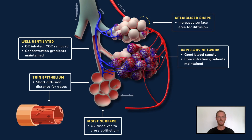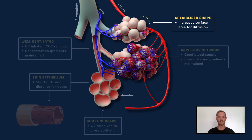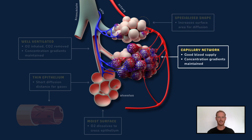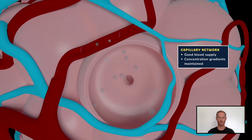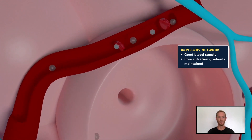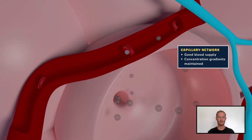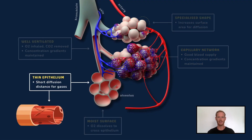The alveoli have a number of features that ensure gases diffuse efficiently. Their vast number and specialised shape maximises the area of the exchange surface, and they have an excellent blood supply as each alveolus is surrounded by a network of capillaries. The blood in these capillaries removes oxygen continually, maintaining a steep concentration gradient between air and blood. The walls of the alveoli and the capillaries that surround them are only one epithelial cell thick, which reduces the distance over which gases must diffuse, speeding up the rate of exchange.